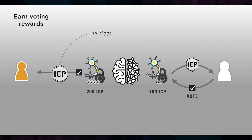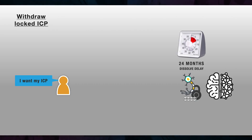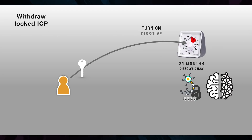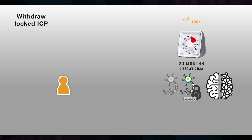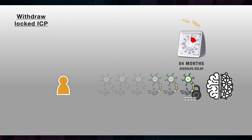Some other factors affect your neuron's voting power and the rewards you receive. A neuron behaves a bit like a time deposit bank account, where you can ask to withdraw your money at any time, but it is always given to you after a delay. To withdraw ICP tokens locked inside one of your neurons, you must dissolve it. Dissolving takes time, but you can start and stop the process whenever you like. The minimum time remaining before a neuron can completely dissolve and release its locked tokens is known as the dissolve delay, and this falls while a neuron is being dissolved.